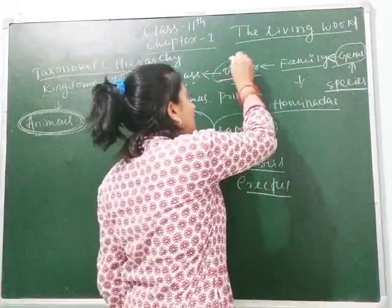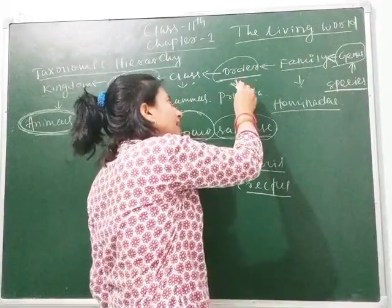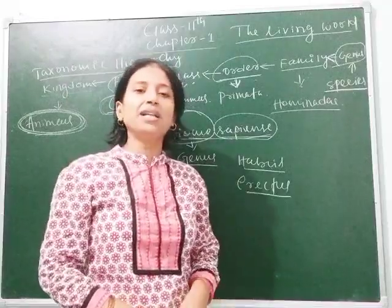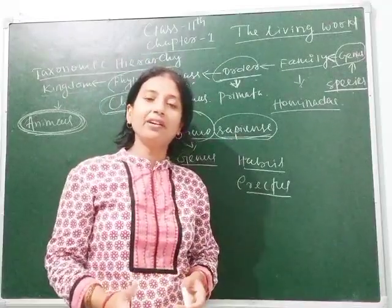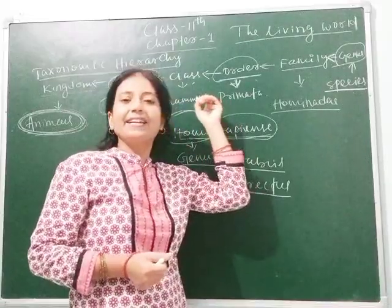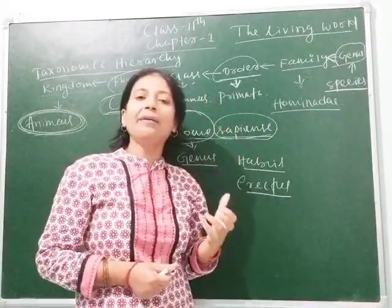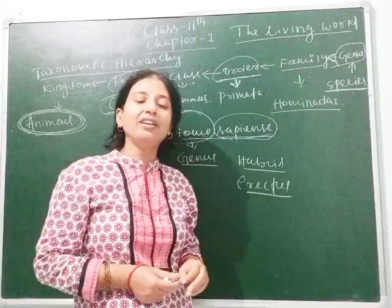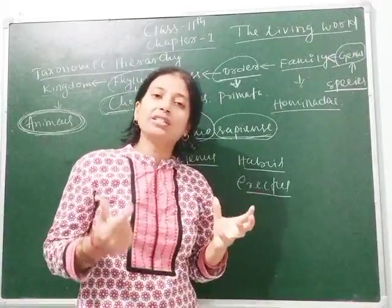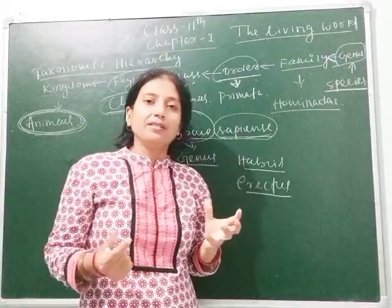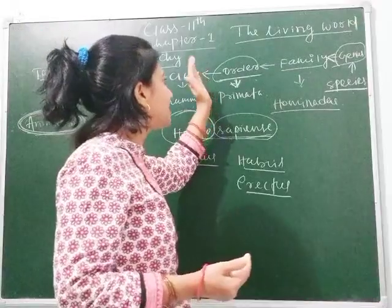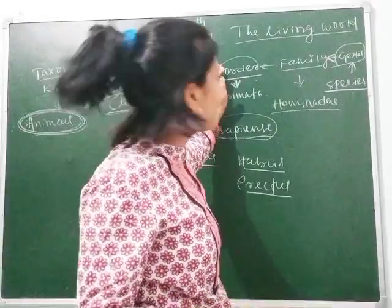When we come to order Primata, monkey, chimpanzee, gorilla, orangutan, and human beings are all placed here. Their characteristic features are that they are all primates — they have a common ancestor and show the same body structure, although their behavior is different. That is why they are called Primata.